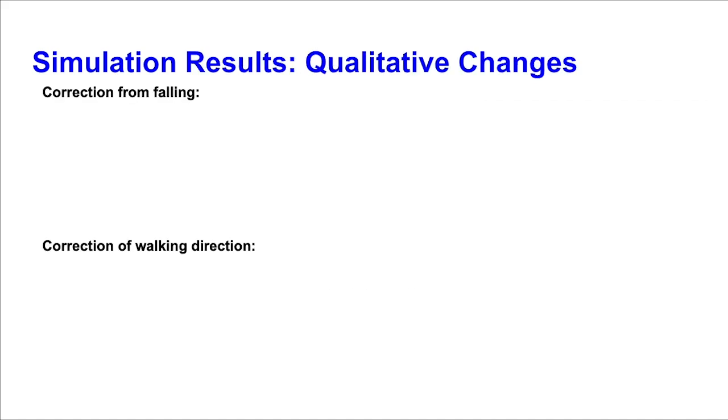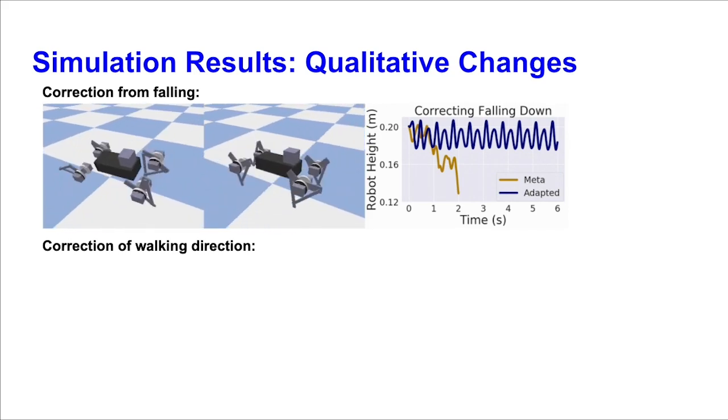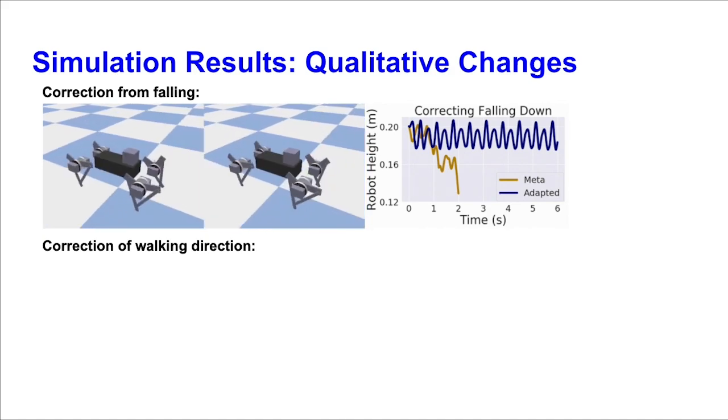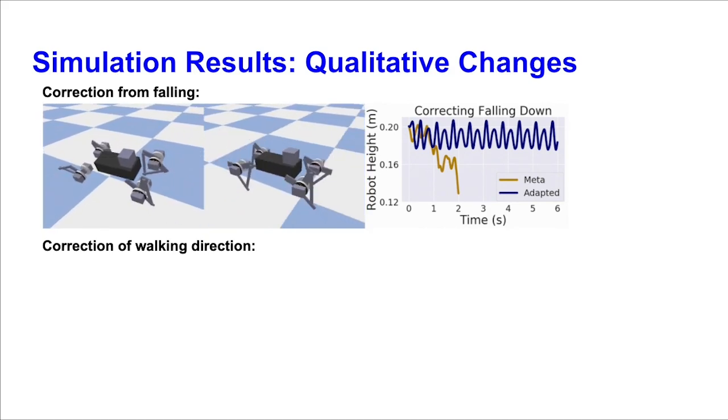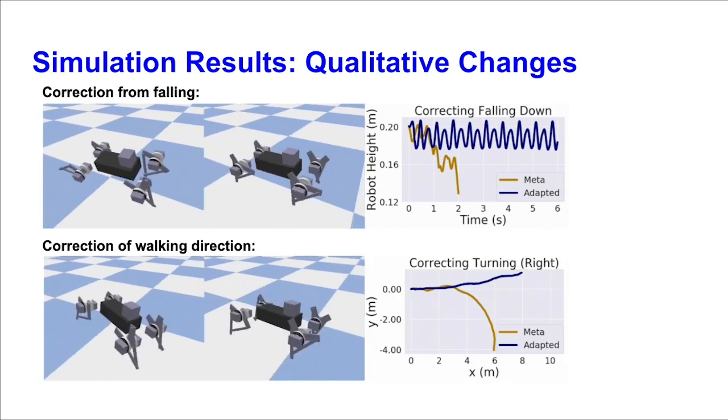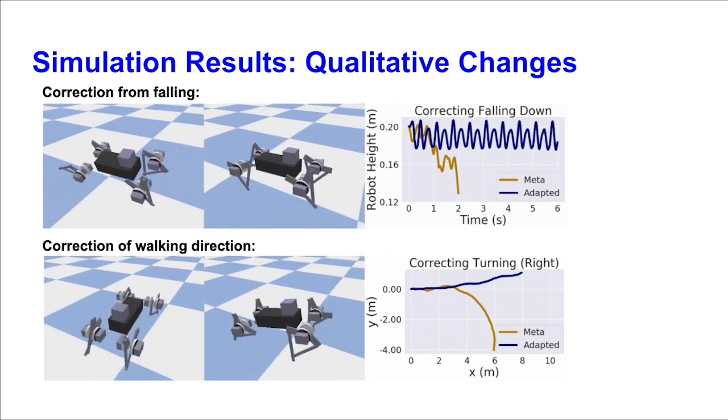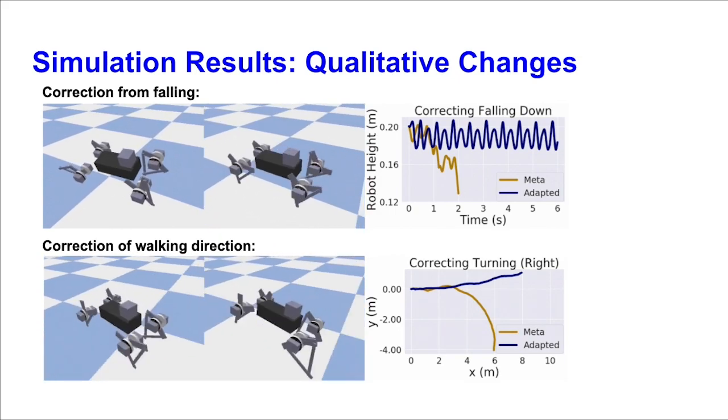During training in simulation, we see that the meta-policy fails on certain tasks, while the adaptive policy corrects for such behavior. For instance, on the top animation, the left side shows the meta-policy falling down, while the right animation shows the adaptive policy walking correctly. The robot measurements are displayed in the plot. Another example is in the bottom animation, where the meta-policy makes sharp turns, while the adaptive policy produces a straight line to reduce energy expenditure.